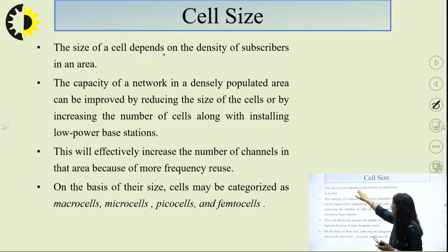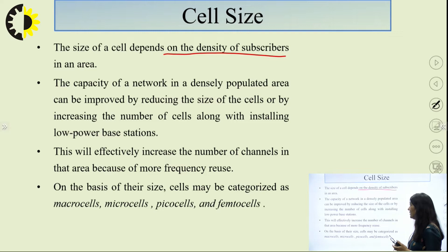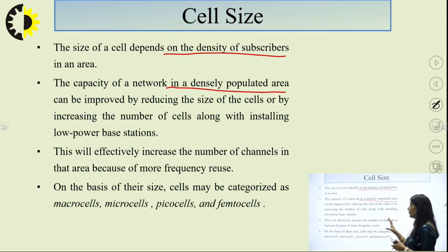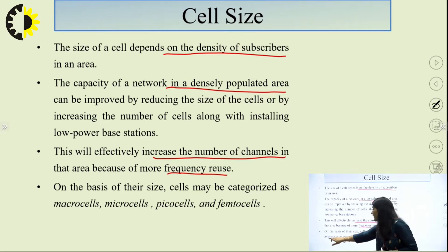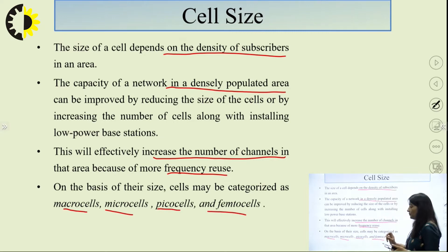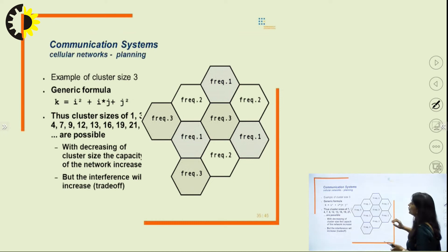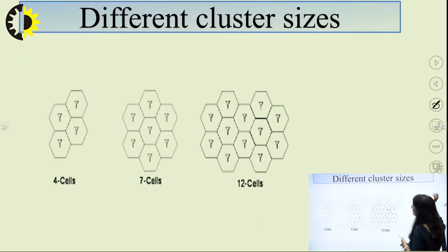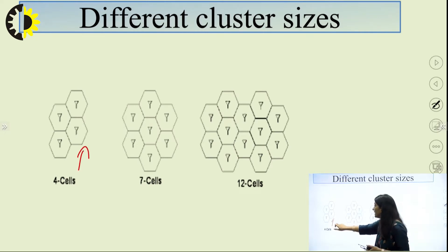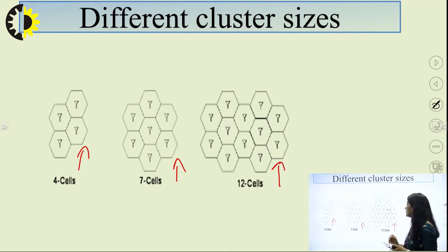The size of a cell depends on the density of subscribers in the area. The capacity of a network in a densely populated area can be improved by reducing the cell size or increasing the number of cells with low-power base stations, which increases the number of channels through more frequency reuse. Based on size, cells are defined as macro cell, micro cell, pico cell, and femto cell. Valid cluster sizes include 4, 7, 9, 12, 13, 16, and 19.